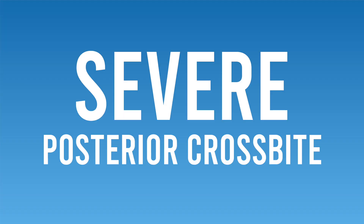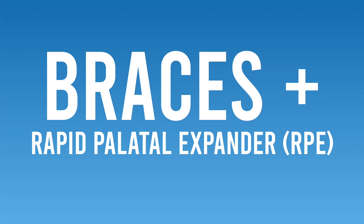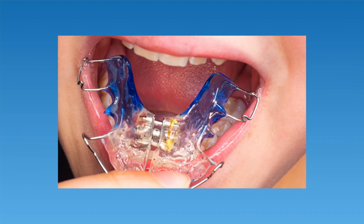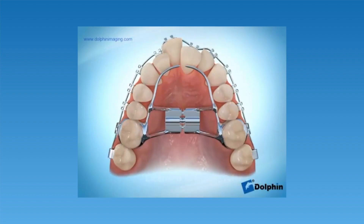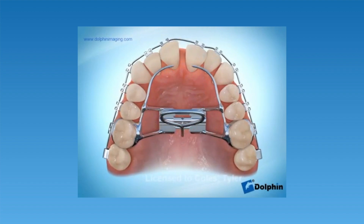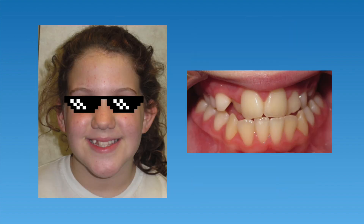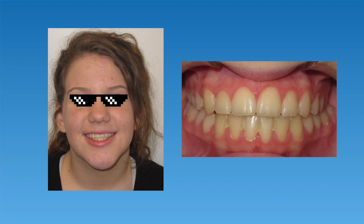Now let's talk about how we correct a severe posterior crossbite. If a patient has a severe crossbite, a combination of braces and a rapid palatal expander, or RPE, may be needed. This type of expander expands both the teeth on the upper arch as well as the bones of the palate, and is generally used only in young children and growing teenagers. The patient shown here is a good example of a severe bilateral posterior crossbite that would benefit from an RPE. This animation demonstrates what a rapid palatal expander looks like and how it expands the upper arch. The patient shown received braces and an RPE and achieved full correction of her posterior crossbite.